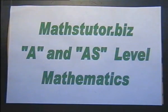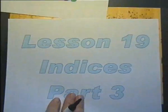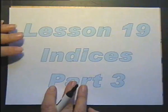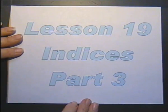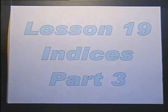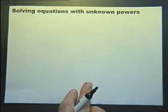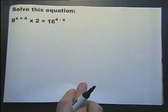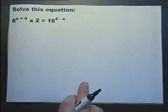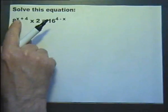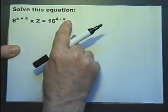A and A-S level mathematics. Lesson 19, indices, part 3. We're going to be looking at solving equations with unknown powers. So let's have a go at solving this equation with these unknown powers.